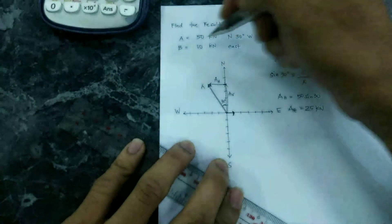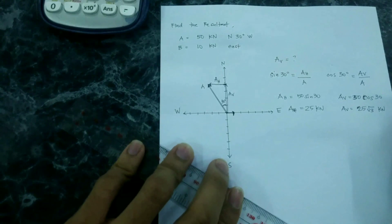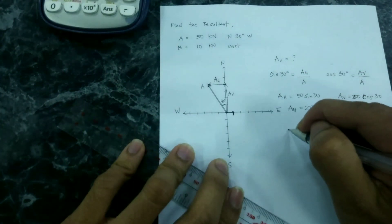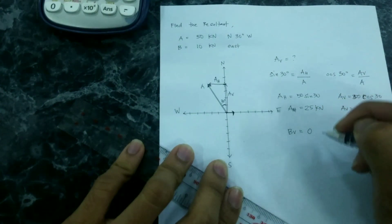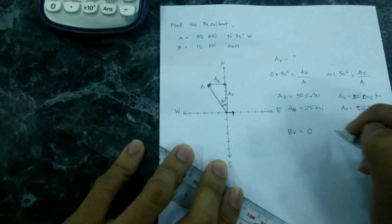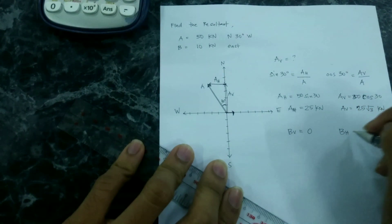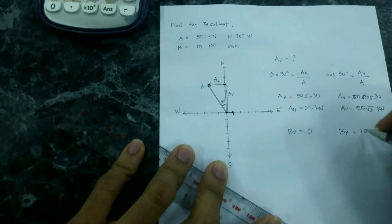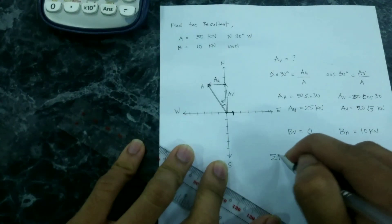For force B, that is just going to the east — there is no vertical component. So the vertical component of B is equal to 0, and the horizontal component is simply 10 kN.